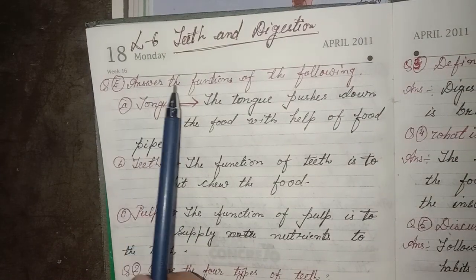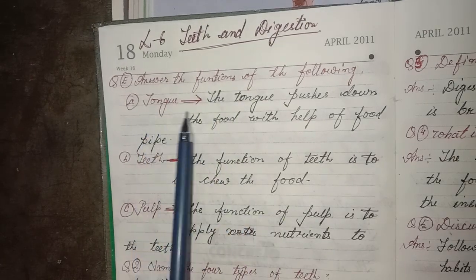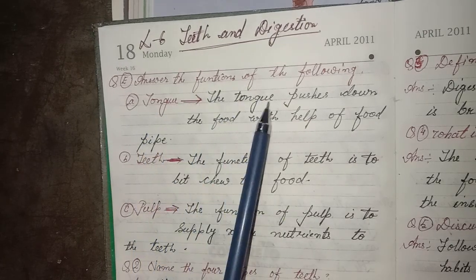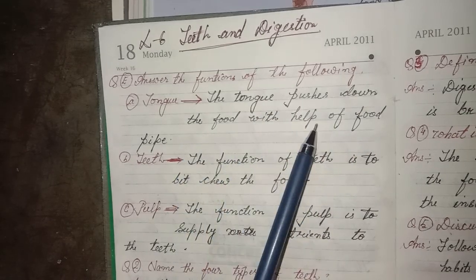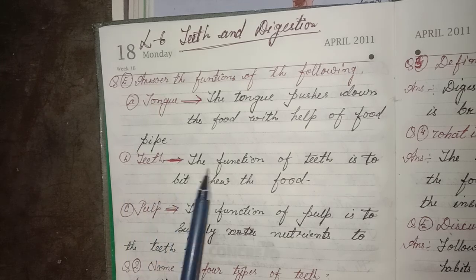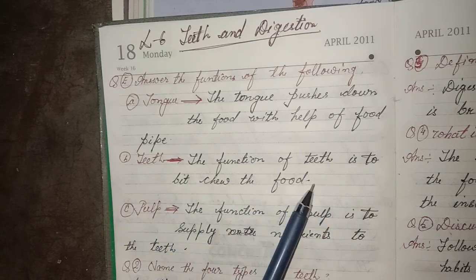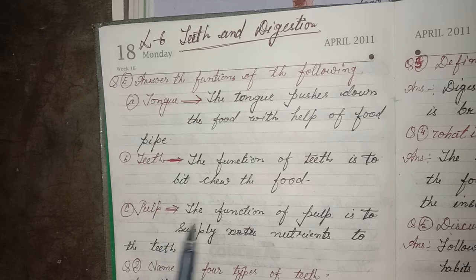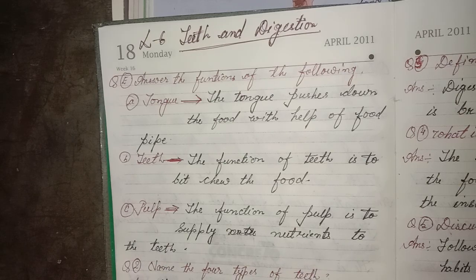First, answer the function of the following. A — Tongue: the tongue pushes food down with the help of the food pipe. B — Teeth: the function of teeth is to bite and chew the food. C — Pulp: the function of pulp is to supply nutrients to the teeth.